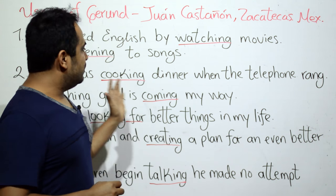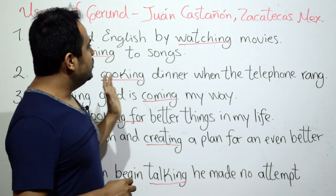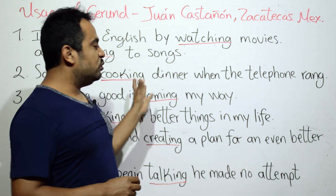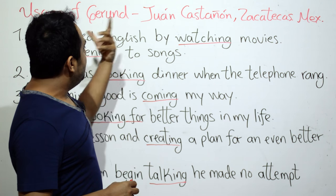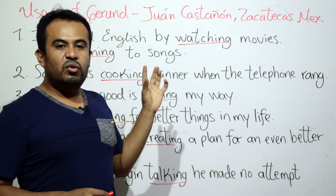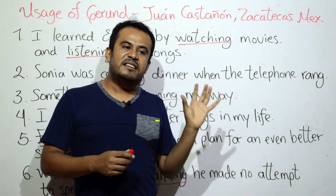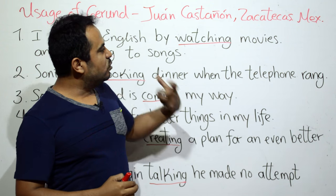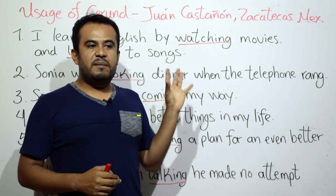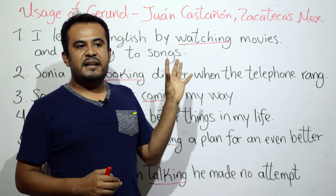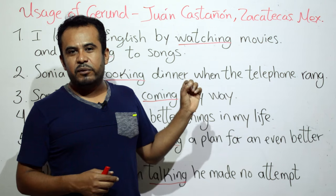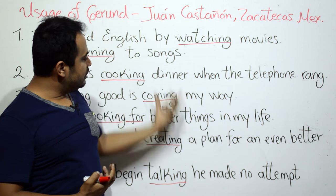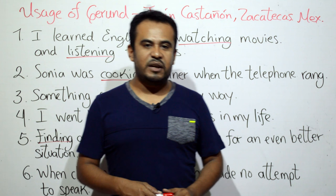¿Qué vamos a hacer aquí con estas oraciones? Lo que tenemos son palabras en gerundio. Voy a explicar cada uno de estos ejemplos para decirles por qué se usó gerundio ahí. Ahora lo voy a hacer al contrario: pongo el ejemplo y luego digo por qué se usó gerundio.